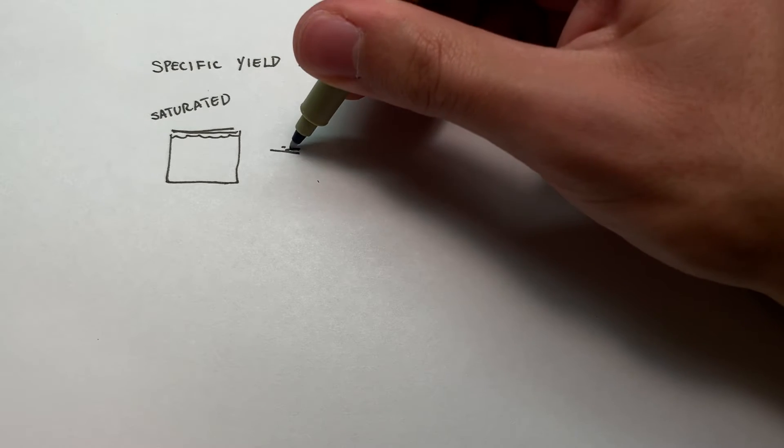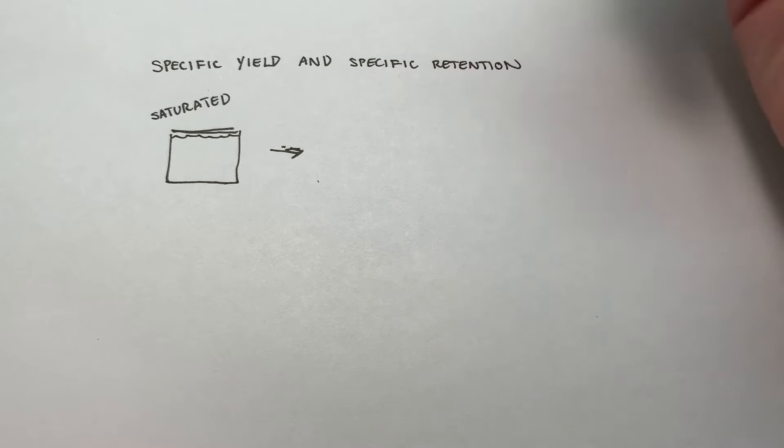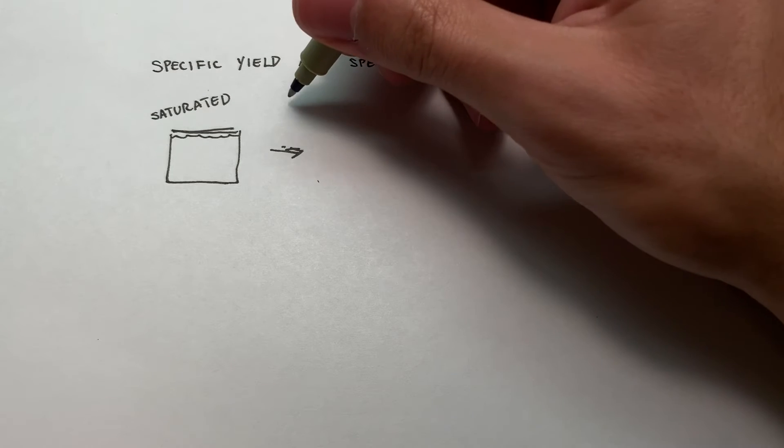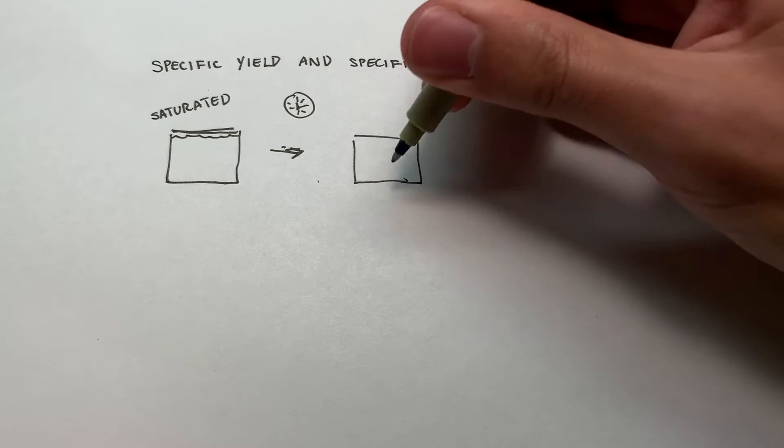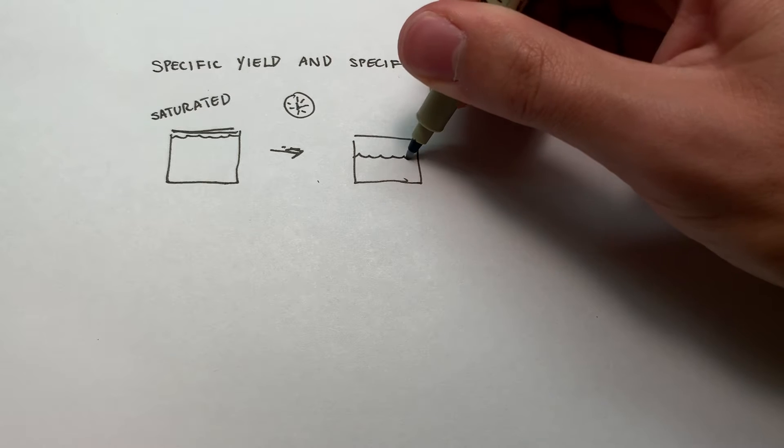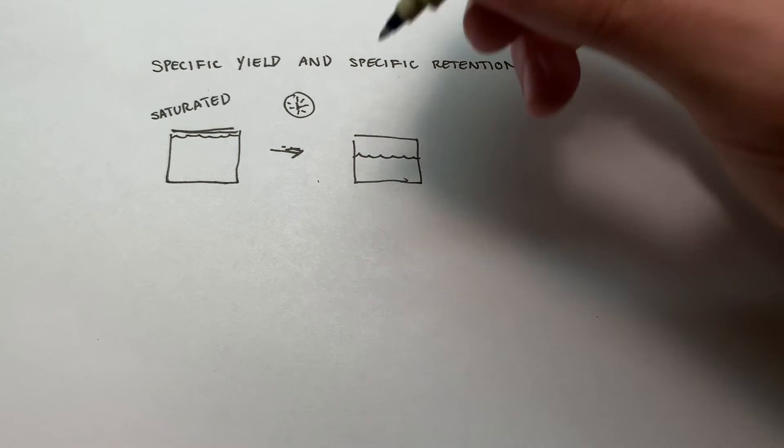Over time, what's going to happen to this sample, since gravity is acting on it, over time, what we're going to see happen if we draw it again, is that some of that water is going to drain out. Okay. Easy enough.